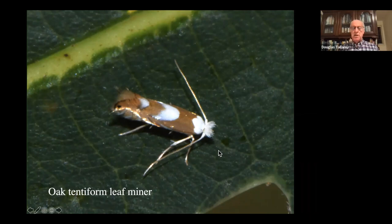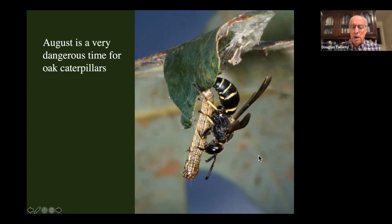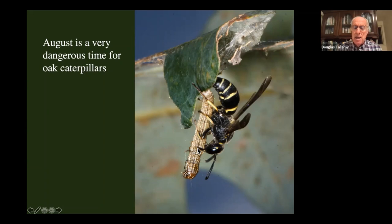August is a very dangerous time to be a caterpillar because populations of their enemies have grown very large. This is a yellow-striped oak worm that a potter wasp has just stung and paralyzed. It'll carry it off to its mud nest — they're called potter wasps because they make pottery-like mud nests, stuff them full of caterpillars, and lay an egg on it. The egg hatches and eats the caterpillar alive. It's essentially a form of refrigeration — the wasp paralyzes the caterpillar to keep it fresh the entire time the larva is feeding.